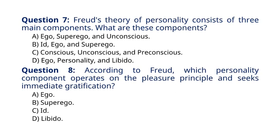Question 7. Freud's theory of personality consists of three main components. What are these components? A. Ego, superego, and unconscious. B. ID, ego, and superego. C. Conscious, unconscious, and preconscious.